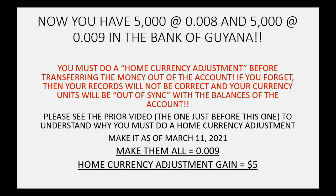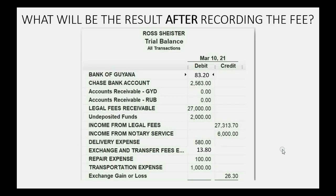The total home currency adjustment gain should be $5, because it's only 0.001 times the 5,000 units that went in at 0.008. After the adjustment, the Bank of Guiana will increase by $5 US because 5,000 of the 10,000 units are increasing by 0.001. This increases the Exchange Gain or Loss by $5.